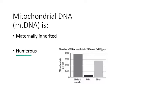Mitochondrial DNA is also very numerous. Looking at data from humans, a graph shows the number of mitochondria in different cell types — muscle, skin, and liver — and we can see it varies across cell types. But especially in skeletal muscle, the number of mitochondria per cell is really high. So if you're trying to get a lot of mitochondria for molecular ecology studies, muscle is a really good tissue type to use because there's a lot of mitochondrial DNA present there.